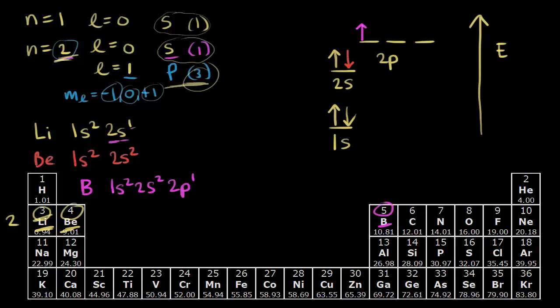Next we have carbon, which has a total of six electrons. We know the sixth electron is going into a p orbital in the second energy level. The question is: which of the three p orbitals do we put this next electron into? We have to think about something called Hund's rule.